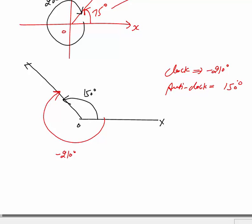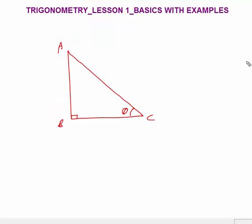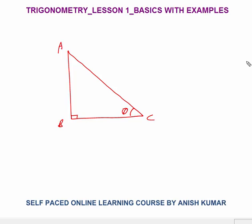You must understand the meaning of a negative angle. Now, entire trigonometry is based on the right-angle triangle. Whatever sine theta, cos theta, tan theta — everything is related to a right-angle triangle. I have assumed a right-angle triangle ABC where this angle is theta and this angle is 90°. The base is the side that contains both the theta angle and the 90° angle. The other side is the perpendicular, and the longest side is the hypotenuse.